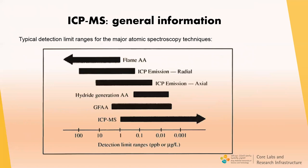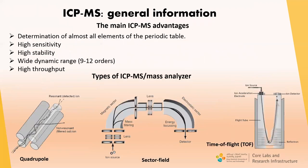Currently, the ICP-MS method is the most sensitive among the major atomic spectroscopy techniques. Detection limits achieve concentrations less than nanogram per liter, which is significantly better than the previously more sensitive method — atomic absorption with graphite furnace — can offer. Except for high sensitivity, ICP-MS provides the following advantages: determination of almost all elements of the periodic table, high stability, wide dynamic range, and high throughput. At the present time, the ICP-MS method is very popular and widely used in analytical laboratories.